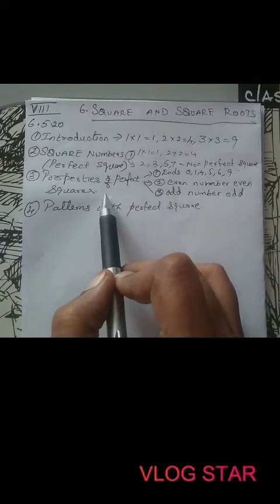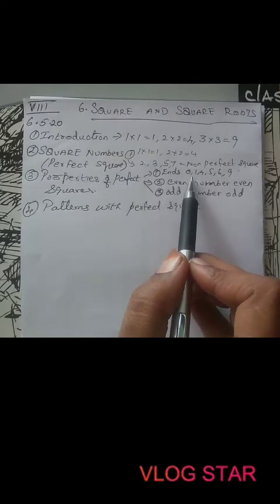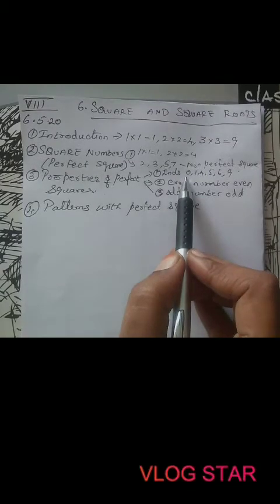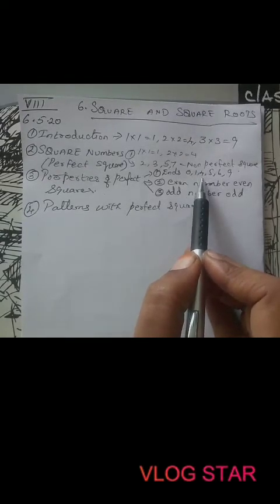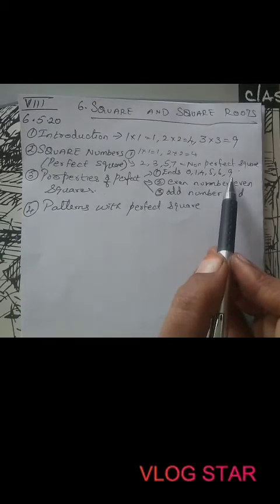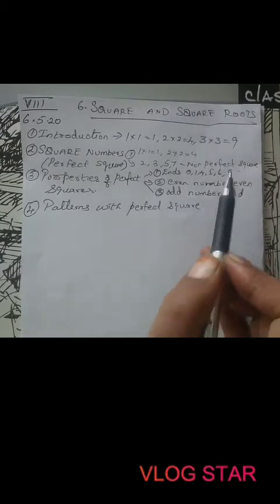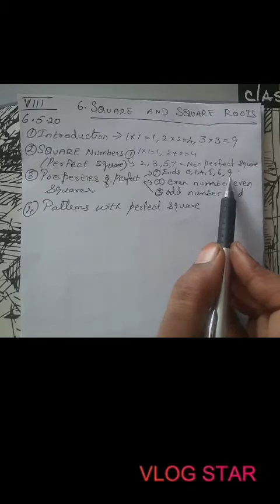Then we learned the properties of perfect squares. A perfect square always ends with 0, 1, 4, 5, 6, or 9. For example: 0 times 0 is 0, 10 times 10 is 100 — ending in 0. 1 times 1 is 1, 9 times 9 is 81 — ending in 1. 2 times 2 is 4, 8 times 8 is 64 — ending in 4. 5 times 5 is 25, 6 times 6 is 36, 7 times 7 is 49. When any number is multiplied by itself, its units place will be either 0, 1, 4, 5, 6, or 9.